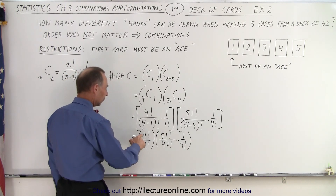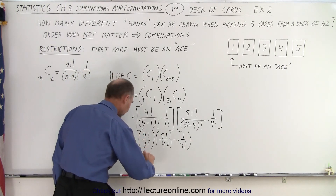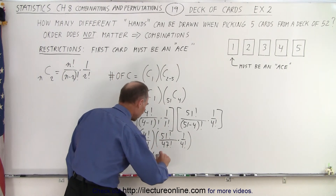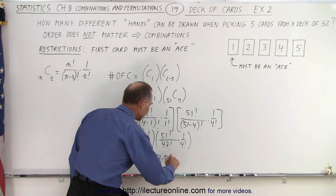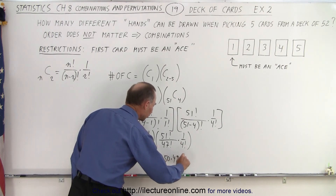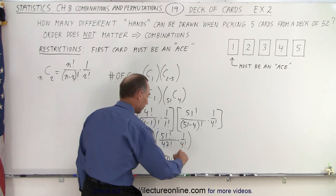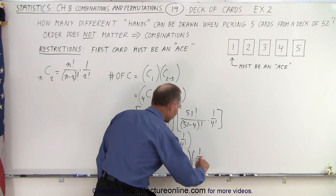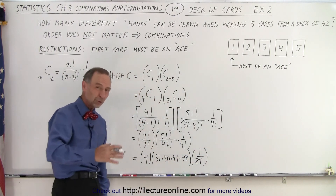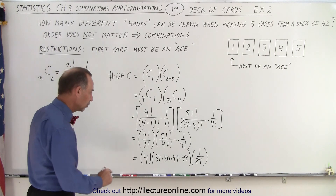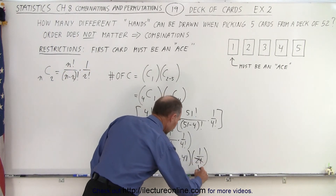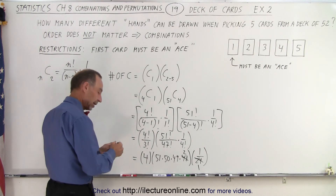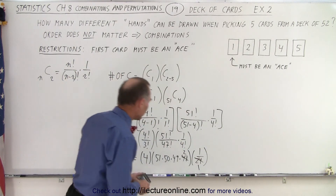Simplifying a little more: four factorial divided by three factorial is simply four. Then we get 51 times 50 times 49 times 48, times one over 24 — because four factorial is 1 × 2 × 3 × 4. Notice that the 24 in the denominator cancels with the 48, leaving a two.